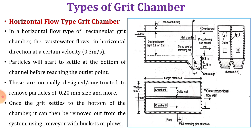The first type is the horizontal flow type grit chamber. As the name suggests, it is a rectangular channel where flow is horizontal. Because of the longer chamber, velocity is reduced as travel time increases; as velocity reduces, grit or inorganic material in the wastewater starts settling at the bottom. By this mechanism the grit settles in the hopper or grit storage and is disposed of safely. The wastewater flows horizontally at a velocity of about 0.3 meters per second, and particles start to settle at the bottom before reaching the outlet point.